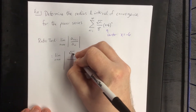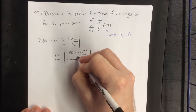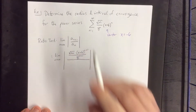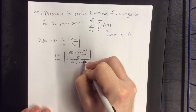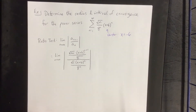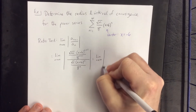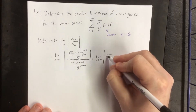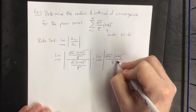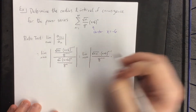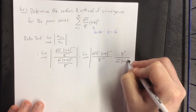In the numerator we'll have the square root of n plus 1, times x plus 6 raised to the n plus 1 power, and in the denominator we'll have 8 to the n plus 1 power — replacing all n's with n plus 1. In the denominator of the overall expression we'll have the square root of n times x plus 6 raised to the nth power, all over 8 to the n.